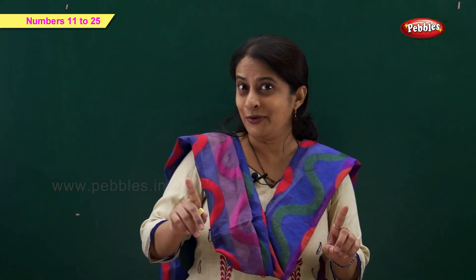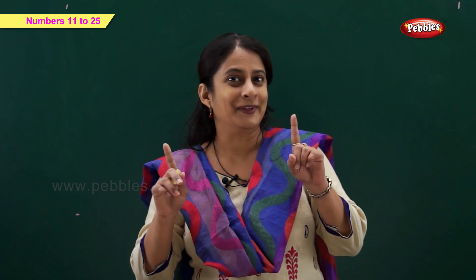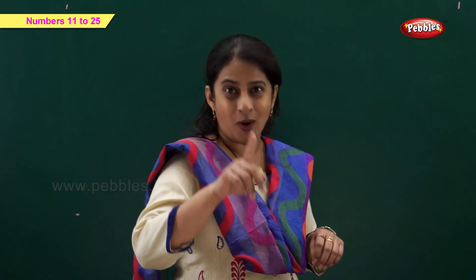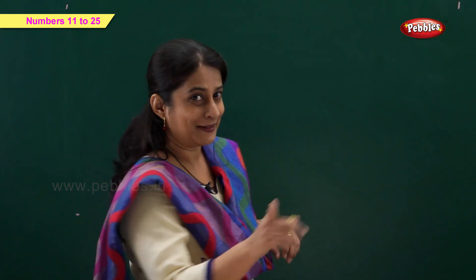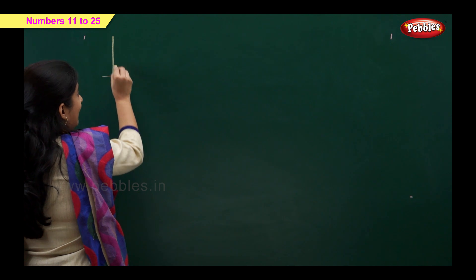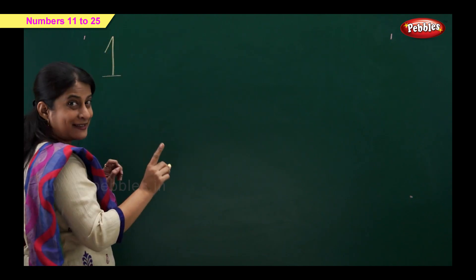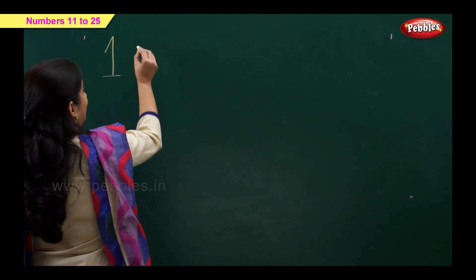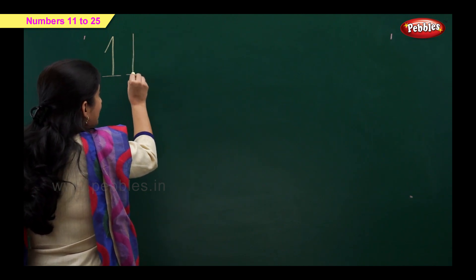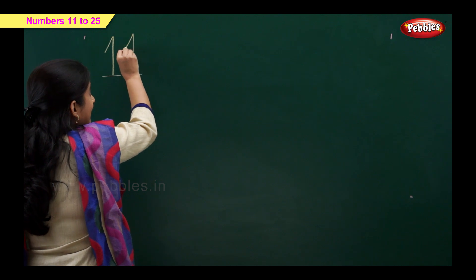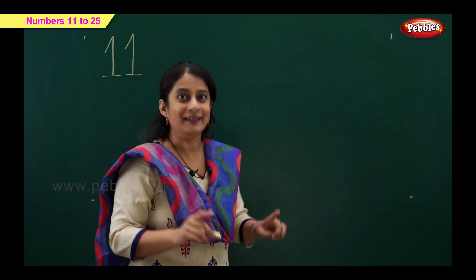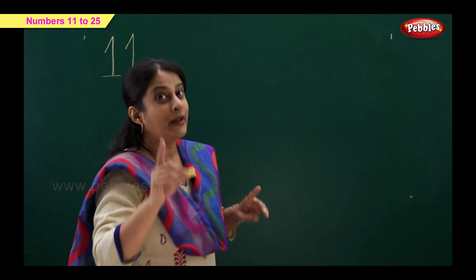Now let us see numbers 11 to 20. Number 11 is 1 and 1. A standing line and a sleeping line, and a slanting line makes number 1. So 1 and 1 is 11.